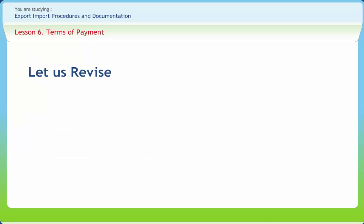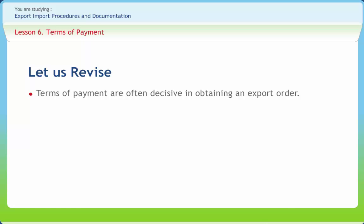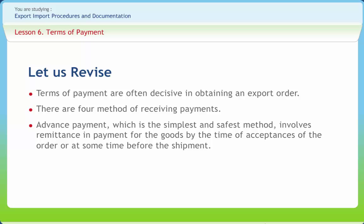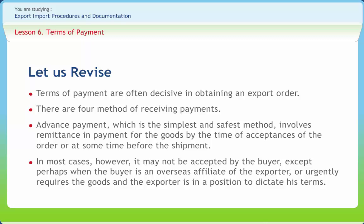Before we end, let us briefly revise what we have studied. Terms of payment are often decisive in obtaining an export order; hence, an understanding of alternative payment terms is important for marketing goods abroad. There are four methods of receiving payments: Advance Payment, Documentary Credit, Open Account, and Shipment on Consignment. Advance payment, which is the simplest and safest method, involves remittance by cable or mail in payment for the goods by the time of acceptance of the order or before shipment. In most cases, however, it may not be accepted by the buyer, except perhaps when the buyer is an overseas affiliate of the exporter, or urgently requires the goods and the exporter is in a position to dictate his terms.